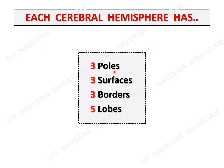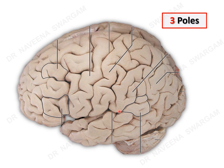Each cerebral hemisphere has three poles, three surfaces, three borders, and five lobes. The three poles are: posteriorly the occipital pole, anteriorly the frontal pole, and below the temporal pole — the sharpest of all poles. The points which help in determining the side of the cerebral hemisphere are the frontal and temporal poles projecting forward, with the broad frontal pole lying above and the sharp temporal pole lying below in anatomical position.